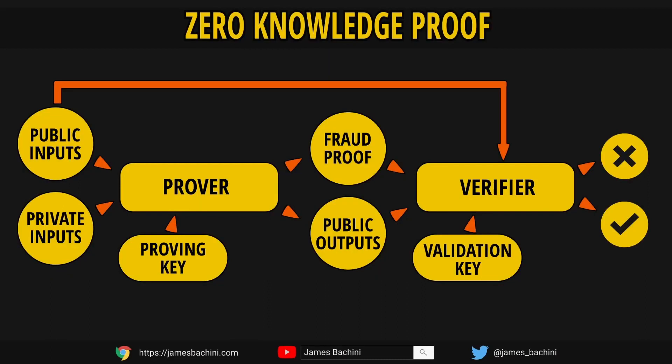For developers, zero knowledge proof systems are built using circuits. A proving key and a validation key are generated using a handshake ceremony between parties where various participants contribute to the key. These can be thought of in a similar way to private-public key pairs in elliptic curve cryptography. The circuit may have private and public inputs. The proving key can then create a proof using those private and public inputs. The proof alongside the public outputs and public inputs are sent to the verifier, and their validation key can assert whether this verification is true or false.